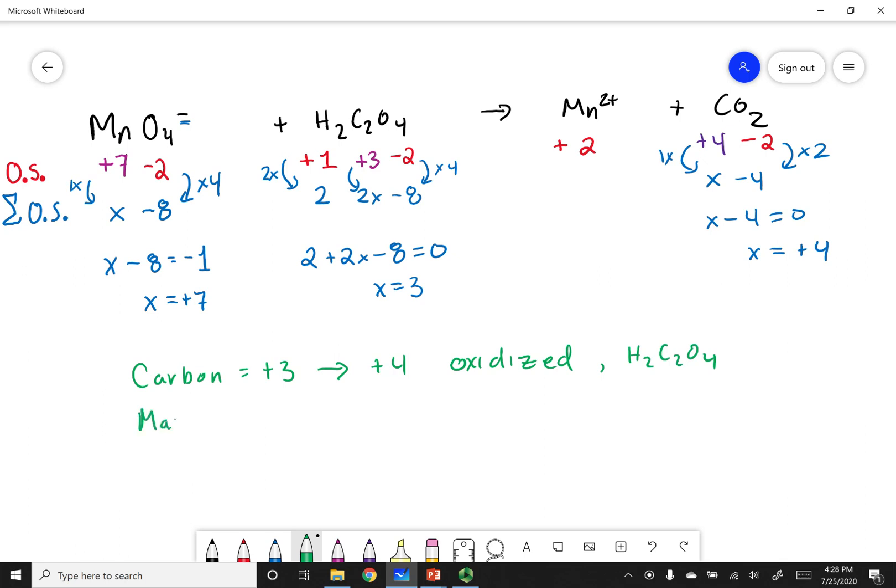Now we can take a look at manganese. It started out as a plus 7 oxidation state and went to plus 2. So its oxidation state was reduced. And so manganese in this reaction was reduced. Or more specifically, MnO4 minus was reduced. Alright, I hope that made sense. And remember to stay safe, M1B.